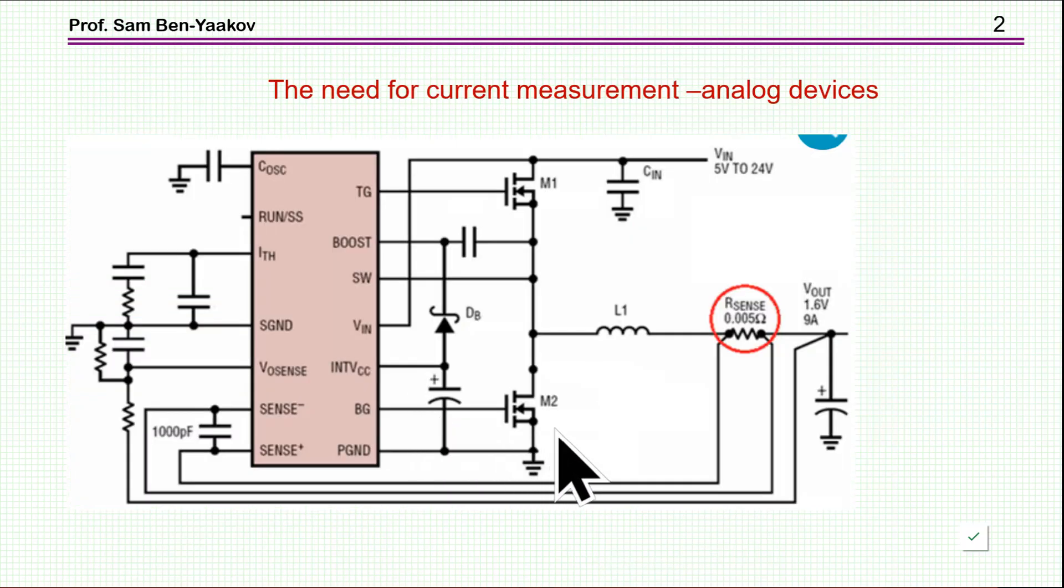There is a need in power conversion systems like here in a buck converter to measure current. This could be for protection or could be for control. Here we have a resistive sensor, a resistor which the current is passing through, and then we are feeding it to the controller. Usually the current is associated with an inductor.